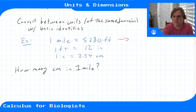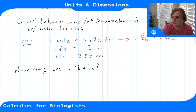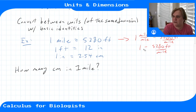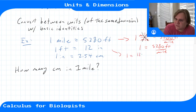If we divide the first equation by a mile, the miles cancel and we're left with one on the left and 5,280 feet per mile on the right. That's a conversion factor that turns miles into feet. Similarly, one equals 12 inches per foot, and one equals 2.54 centimeters per inch.